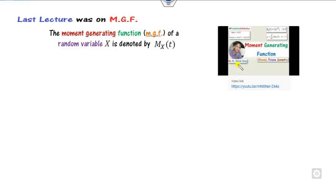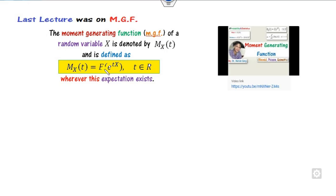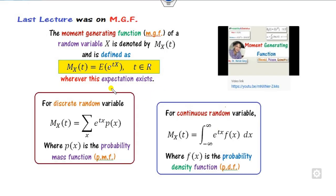What we discussed in our last lecture is related to the moment generating function, denoted by M_X. It is a function from R to R. The moment generating function exists only when the expected values exist. If X is a discrete random variable, we define the expected value as a summation using the PMF.